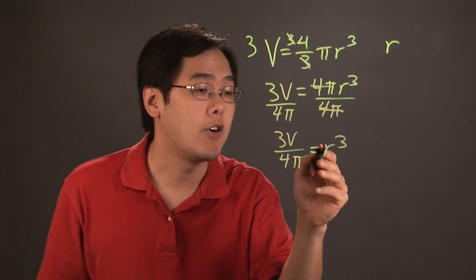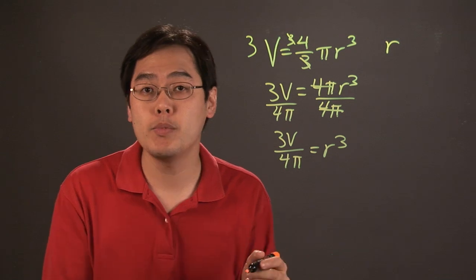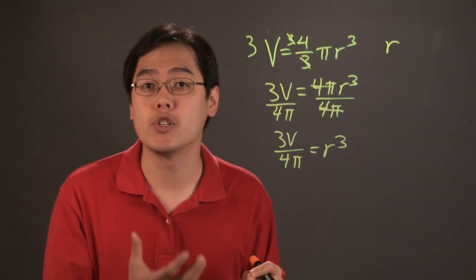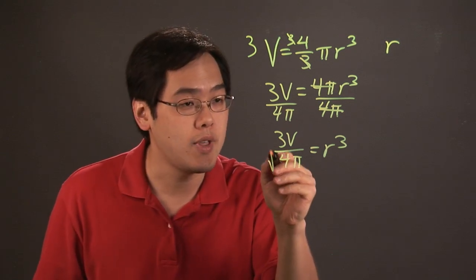And then to solve for r completely, you have r cubed, and to get rid of the cube, you take the opposite operation, which is the cube root. And so we're going to do that.